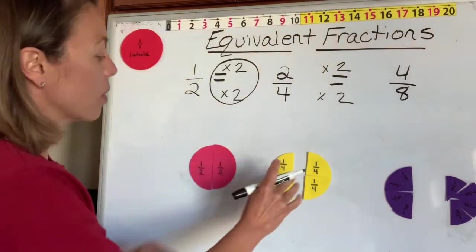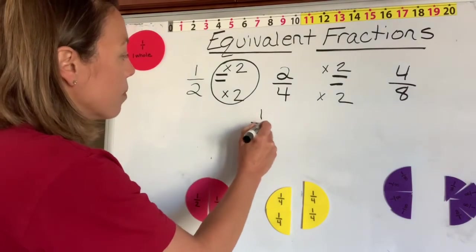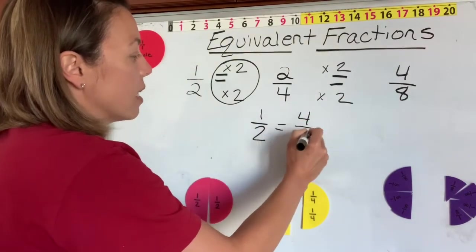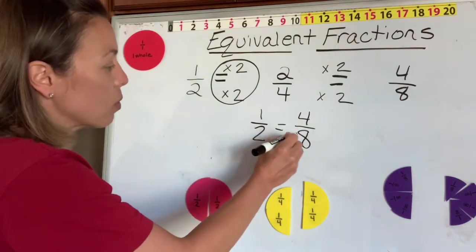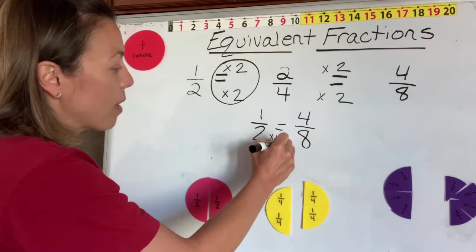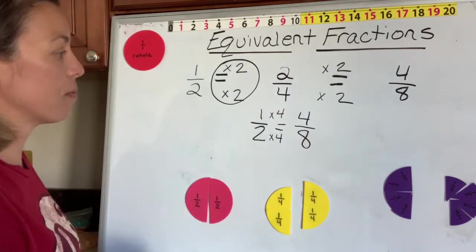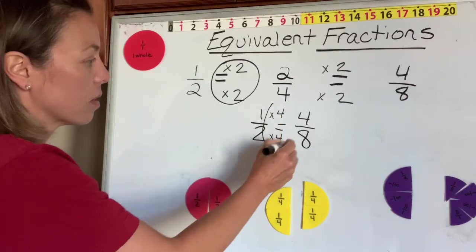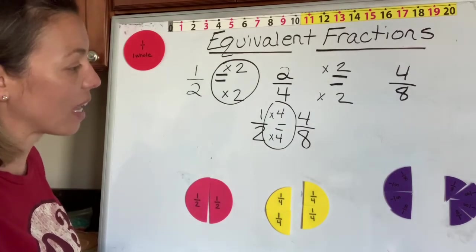If we wanted to go straight from one half, we know that it's equal to four eighths. So let's see if our relationship holds true. To go from two to eight, you have to multiply by four. To go from one to four, you have to multiply by four. One times four is four. Two times four is eight. We multiplied the numerator and the denominator by the same number.